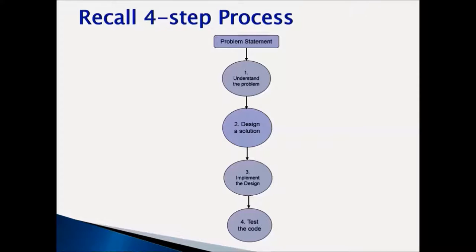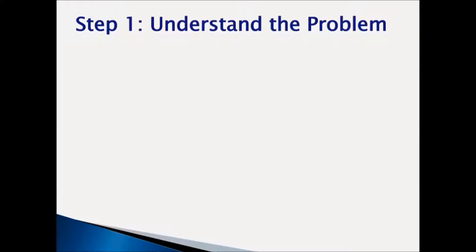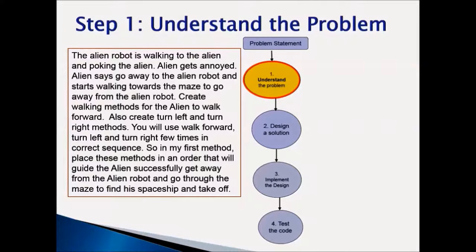We are going to follow the four-step process in solving our Alien Encounter animation. The first step is to understand the problem. The alien robot is walking to the alien and poking the alien. The alien gets annoyed, says go away to the alien robot, and starts walking towards the maze to get away. Create walking methods for the alien to walk forward, also turn left and turn right methods. You will use walk forward, turn left, and turn right in the correct sequence.